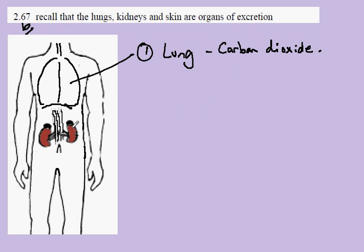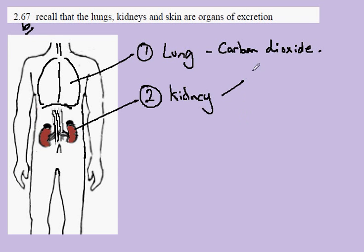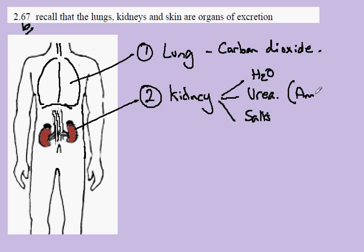The second organ of excretion is the kidneys. We have two kidneys, and they're responsible for the excretion of excess water, the molecule urea, and salts. Urea is the nitrogen waste from amino acids — since we can't store amino acids, we excrete them as urea.